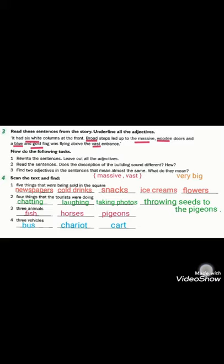Question number four. Scan the text and find. Number one, five things that were being sold in the square. بدنا نستخرج خمس أشياء بتنباع في الساحة حسب النص. Number one, newspapers، صحف. Cold drinks، مشروبات باردة. Snacks، وجبات خفيفة. Ice creams، المثلجات. Flowers، الأزهار. Number two, find four things that the tourists were doing. بدنا أربع أشياء السياح كانوا عم يعملوها. Number one, chatting، كانوا عم يحكوا مع بعض. Two, laughing، كانوا عم بيضحكوا. Taking photos، كانوا عم يلتقطوا صور. Number four, throwing seeds to the pigeons، كانوا عم يرموا البذور أو الحبوب للحمام.